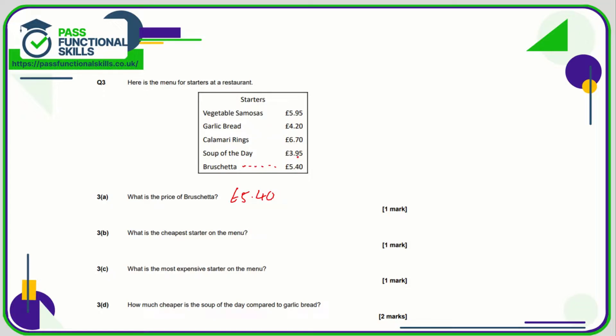The cheapest, £3.95. Does anything beat that in terms of a low price? No, so that is the soup of the day. The most expensive, £5.40, that's quite expensive for the bruschetta, but calamari is £6.70. So calamari is the most expensive item.